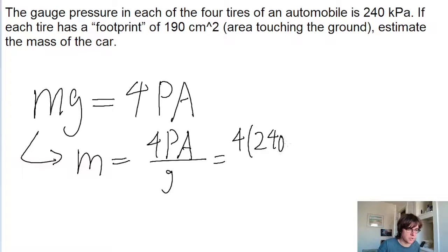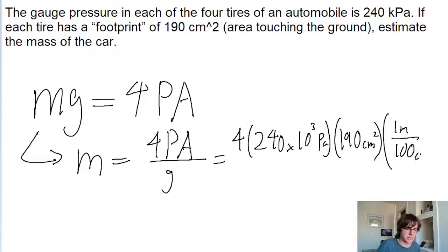Another way to write that would be 240 times 10 to the power of 3 pascals times the area of 190 squared centimeters. And then we'll want to convert from centimeters into meters. So that's 1 meter for 100 centimeters, and then square that because the units are squared.